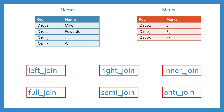We want the 43 marks to be written in front of Edwards, and the 65 marks to be written in front of Josh, and so on and so forth. There are different ways of merging data frames in R — we have different types of joins. I'll first mention those joins and then we'll look into them one by one.